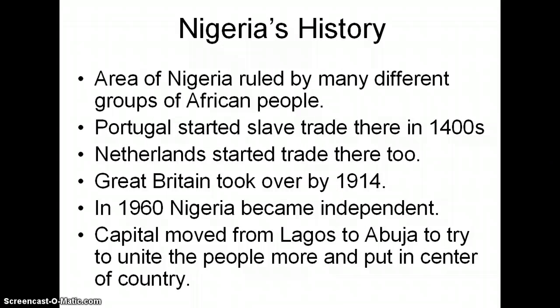Now, Nigeria's history — the area of Nigeria was ruled by many different people, different African groups. Portugal was the first real external contact, and they started the slave trade in the 1400s. The Netherlands started to trade there, too. Great Britain took over in 1914, and in 1960 Nigeria became independent. The capital has moved from Lagos to Abuja to try to unite the people more and to put it in the center of the country.